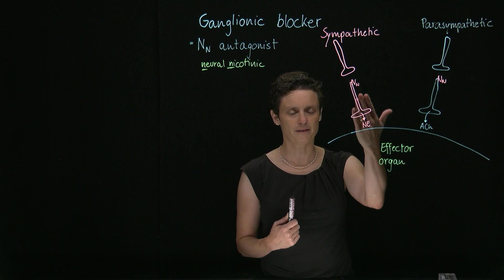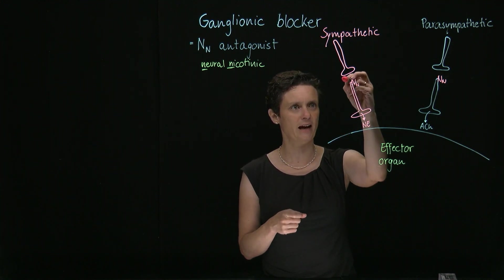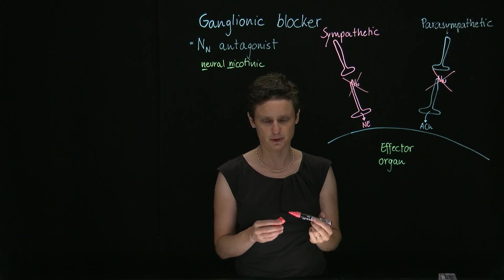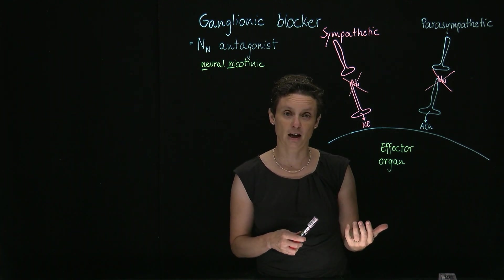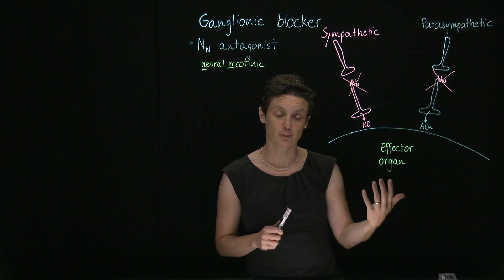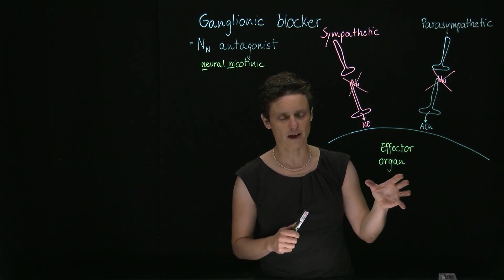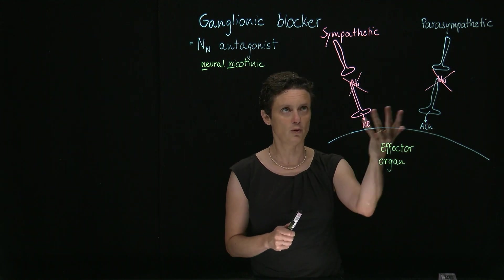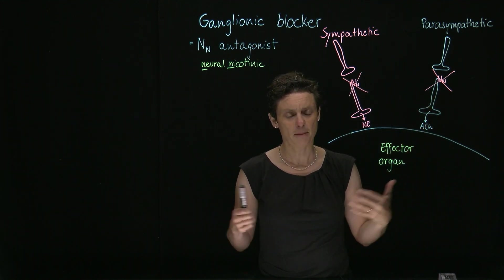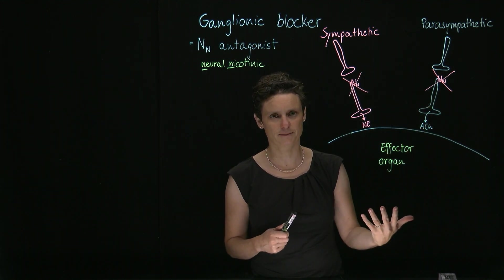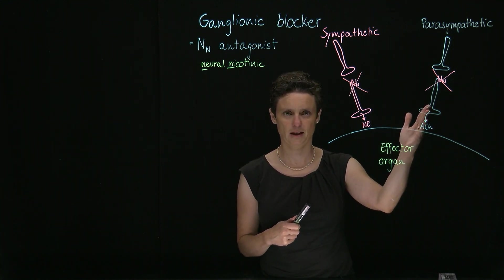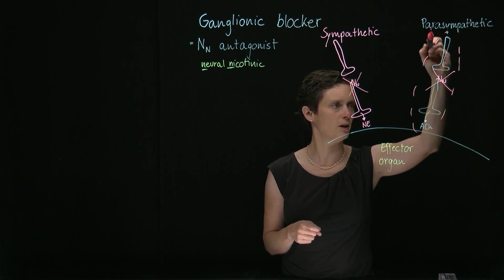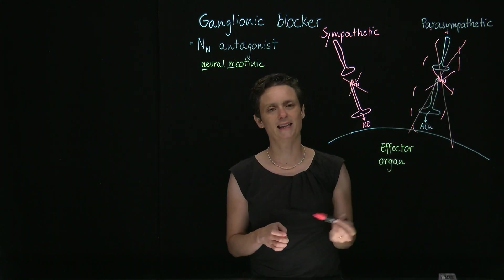Here we have the scenario that we block basically everything. We block the sympathetic and the parasympathetic input. So we have to think about what is the dominant input. You probably know that most effector organs are under dual control. And when sympathetic and parasympathetic battle for one thing, one is the winner.